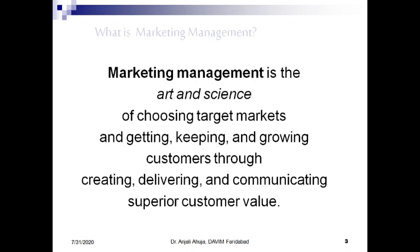When we associate the word management with marketing, management is a systematic process by which we do various tasks. Similarly, when we do marketing in a systematic manner, that becomes marketing management. So marketing management is the art and science — it is art because every manager has different managing skills, and it is science because it includes a systematic process through which various steps like planning, organizing, directing, and controlling are done.